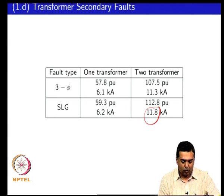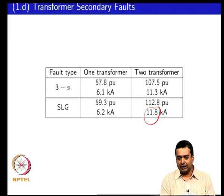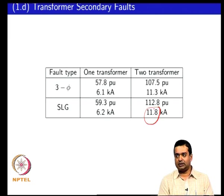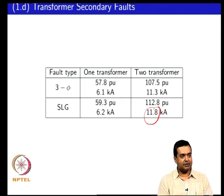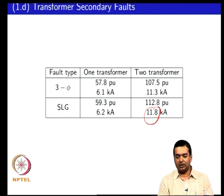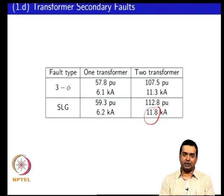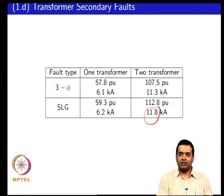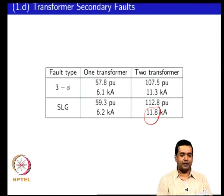The rated current of each feeder is 105 amps — that is the 2 MVA power level. So your breakers have to be rated for a continuous current level of 105 amps.